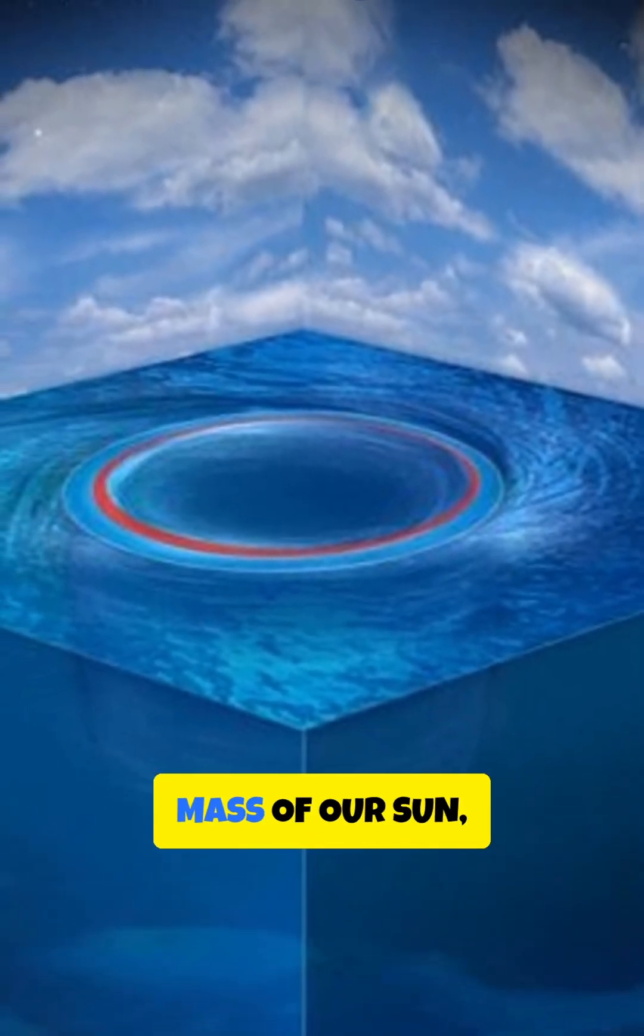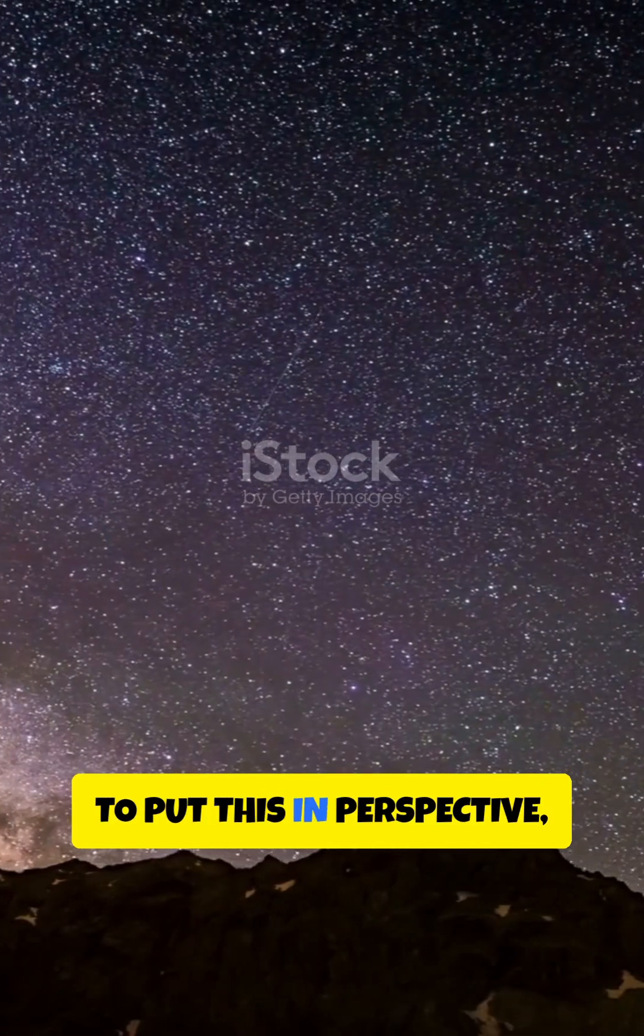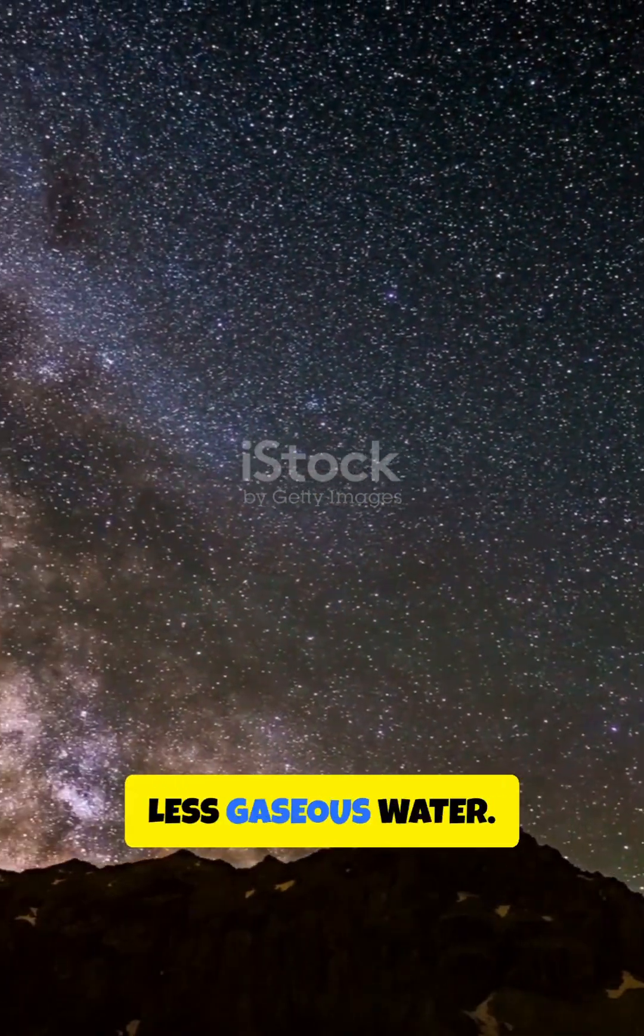Imagine a black hole 20 billion times the mass of our sun, surrounded by water vapor that stretches hundreds of light-years. To put this in perspective, our Milky Way contains 4,000 times less gaseous water.